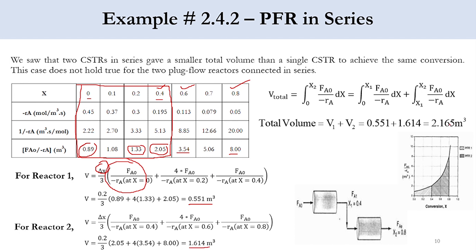Summing the two PFR volumes gives 2.165 m³ — which matches exactly the volume of a single PFR solved previously. This confirms that dividing PFRs in series produces no change in total volume, unlike CSTRs. This difference arises from the nature of the equations: algebraic for CSTRs versus differential for PFRs.